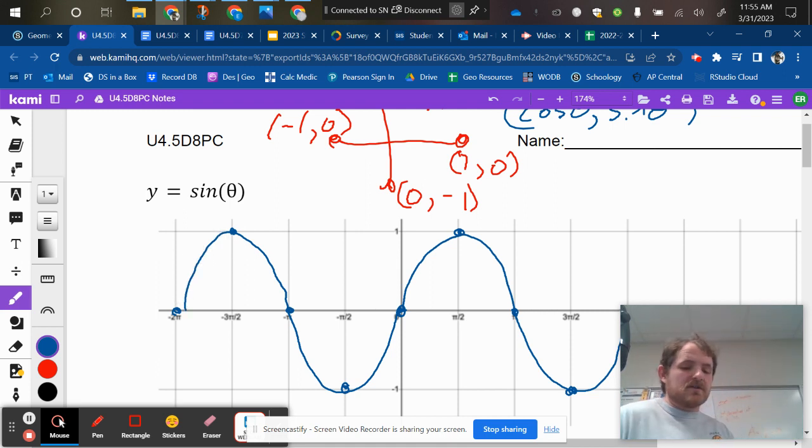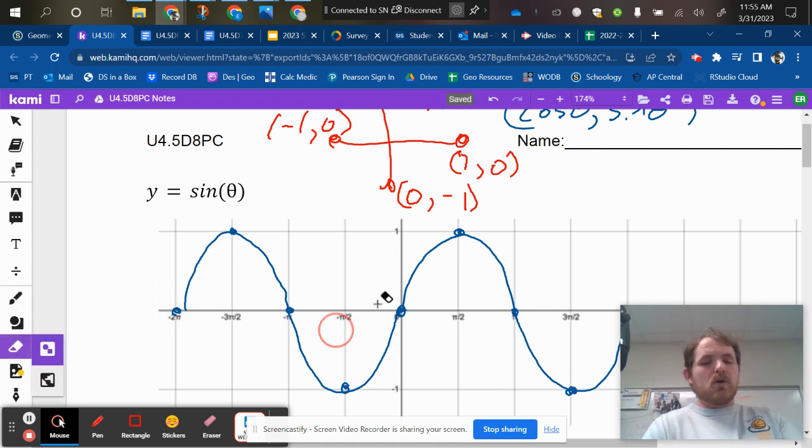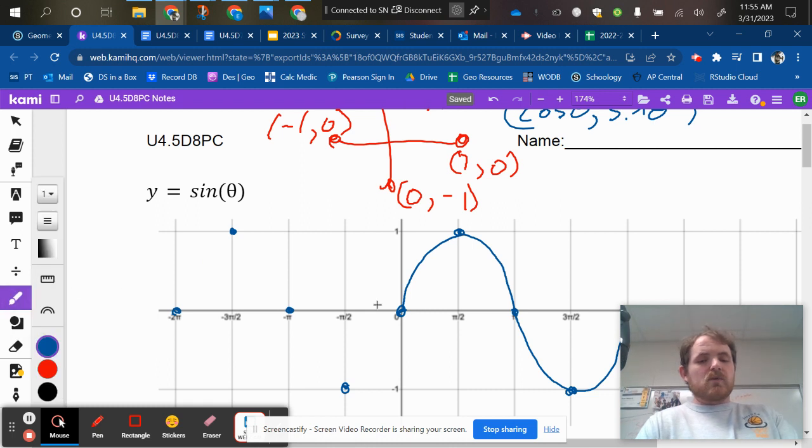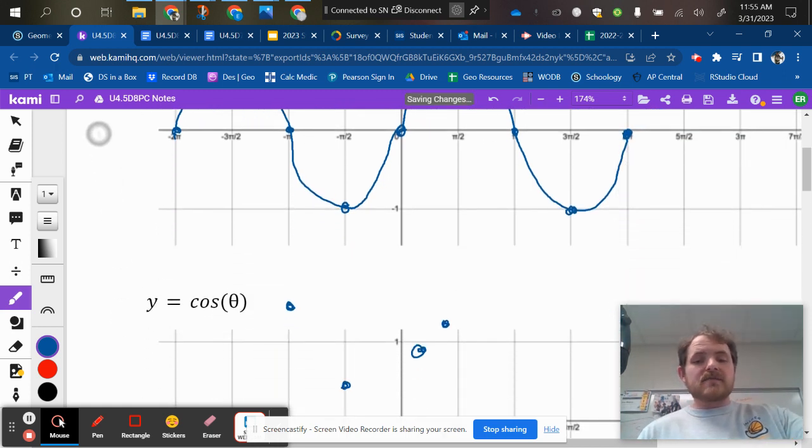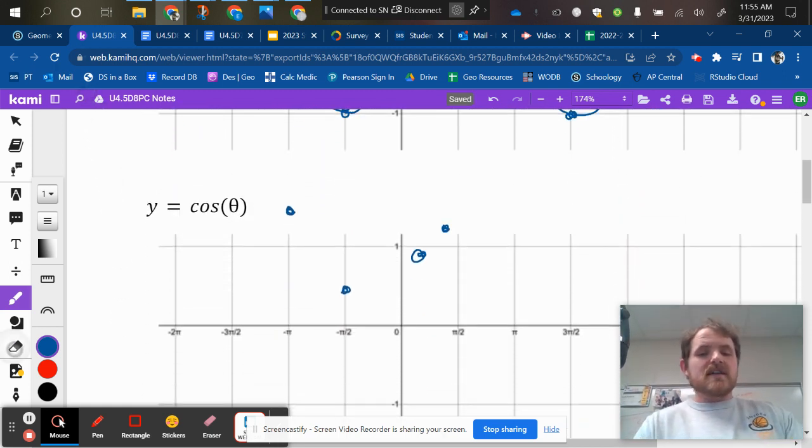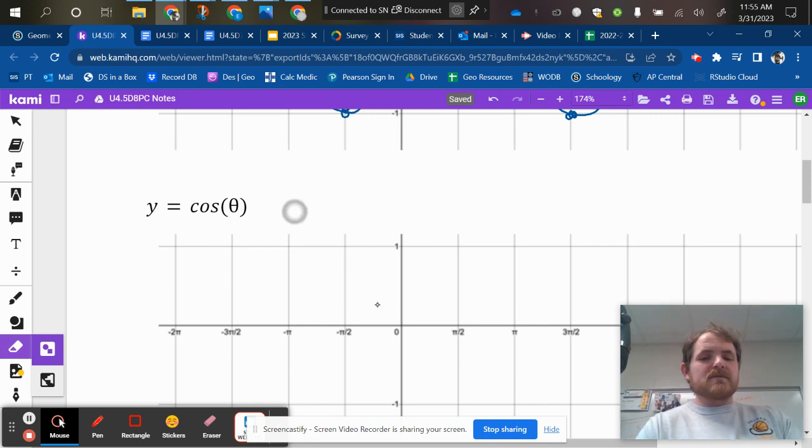Again, hopefully this feels doable after we've been doing it for about a week and a half, okay? That same concept is going to work for cosine. It should look something like this. Sometimes when I backspace, it moves my points. I don't know why.